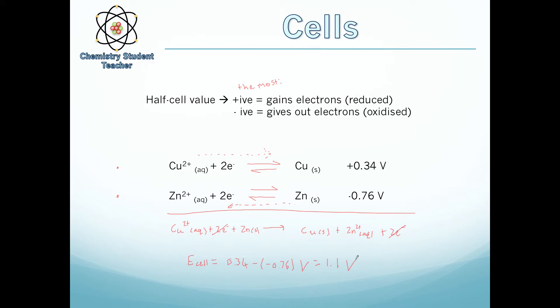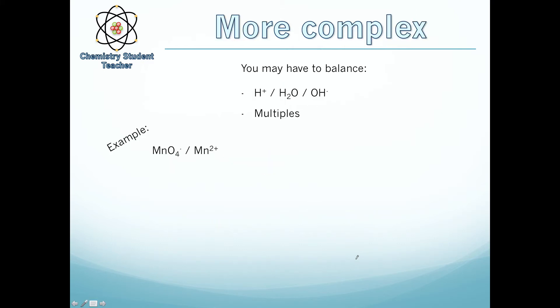Now that was a simple example. Let's take a slightly more complex example. You may have to balance these equations using something like H+, H2O, or OH-. And you may have to have multiples. Just like balancing any equation, you may have to have multiples. So if I take a slightly more complex example, MnO4- and Mn2+. Well, in this equation, as it's always in equilibrium, we have MnO4- and that's in some kind of equilibrium with Mn2+. As these are ions, they're most likely aqueous.